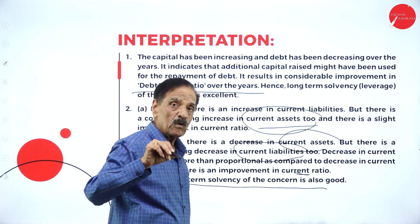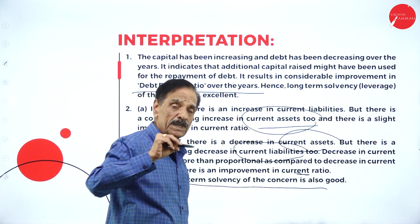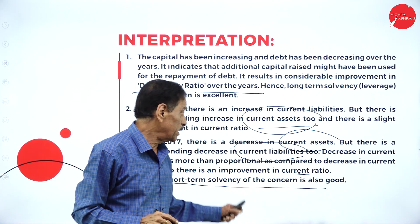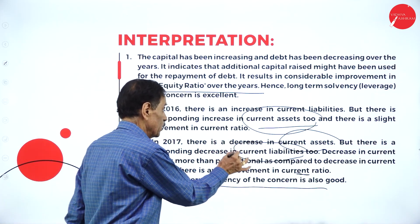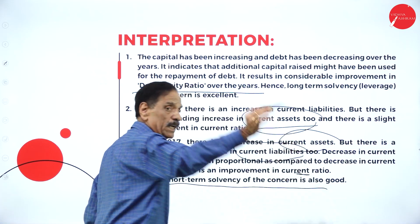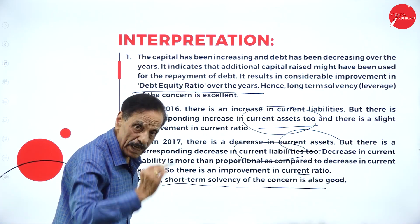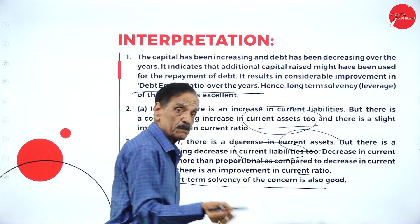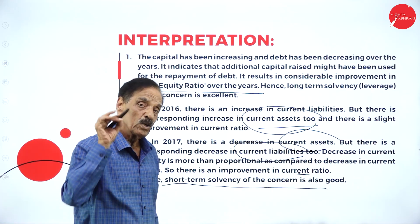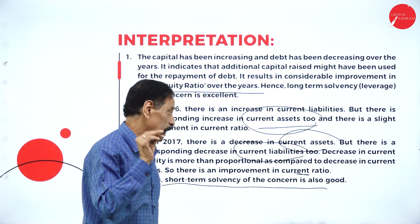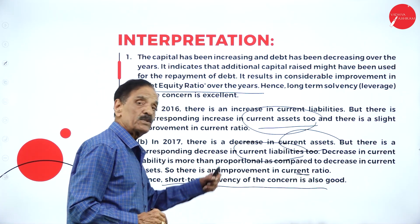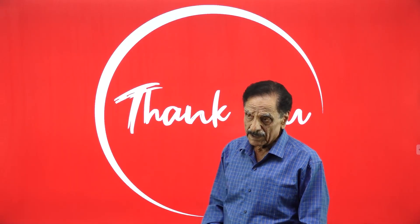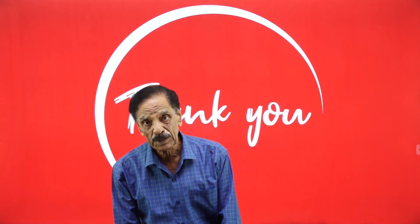Especially here: current assets also decreased, current liabilities also decreased, but current liabilities decreased more when compared to current assets. So this is a good sign of the short-term solvency ratio. This is trend percentage analysis.